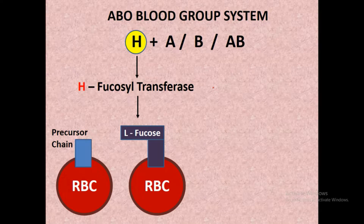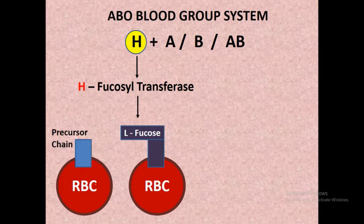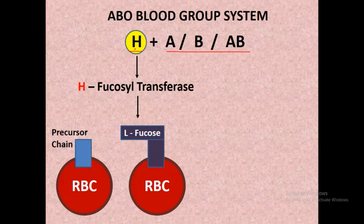Before we go over the Bombay blood group system, we must understand the ABO blood group system and how antigen A or antigen B synthesis takes place on the surface of RBC. Here is the RBC with the precursor chain on its surface. This is the H gene, and these are the A, B, and AB genes. The H gene is essential for the synthesis of either antigen A or antigen B.